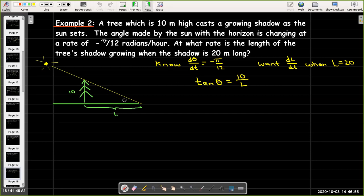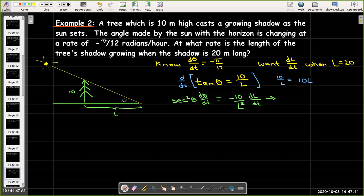Now, I'll go ahead and differentiate implicitly with respect to t. Now, over here, on the right-hand side, I was thinking that 10 over L is, of course, the same as 10 times L to the negative 1 power. And then I can just use the power rule. And that's how I got negative 10 over L squared times dL/dt.